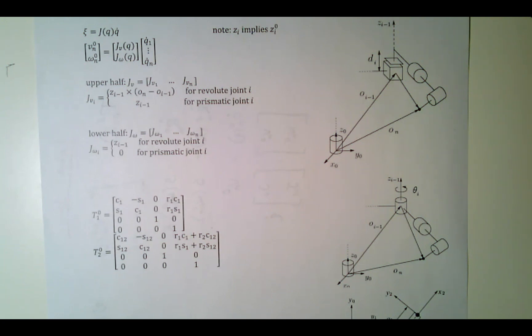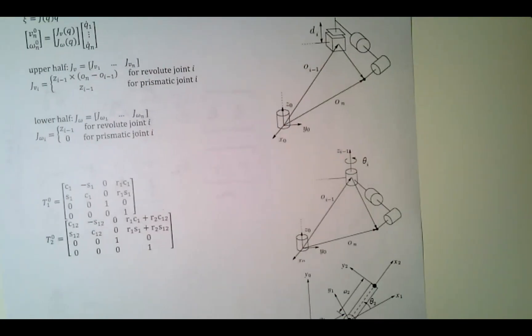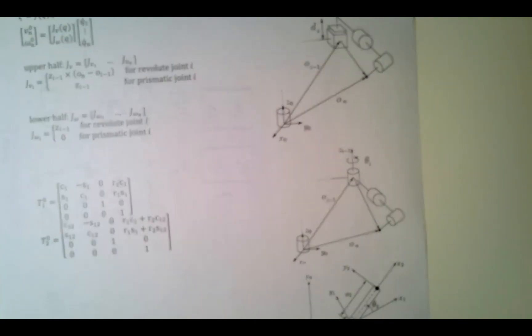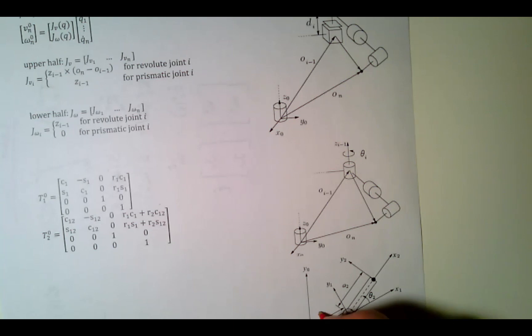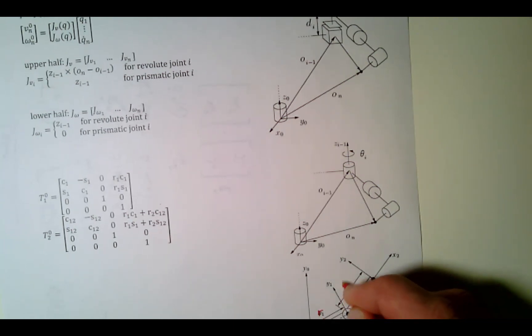All right, let's do an example. So here we have a two-link manipulator. We call the lengths of each link r1 and r2.